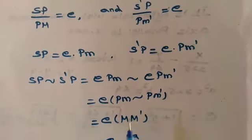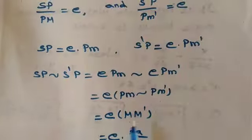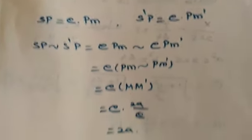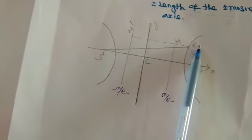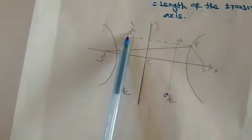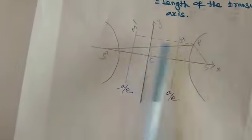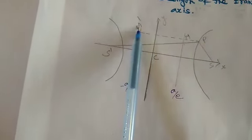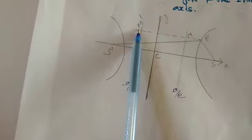PM difference PM dash is equal to MM dash. How we get this answer, see this diagram. PM minus PM dash means we get MM dash.